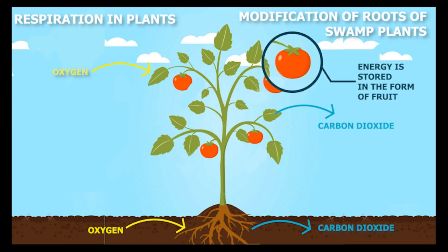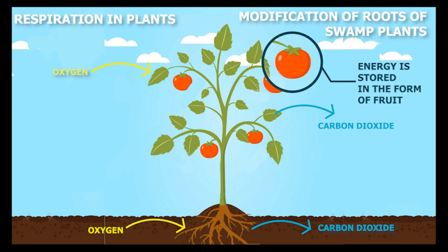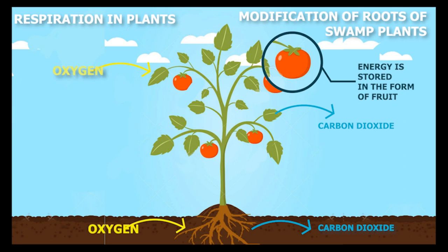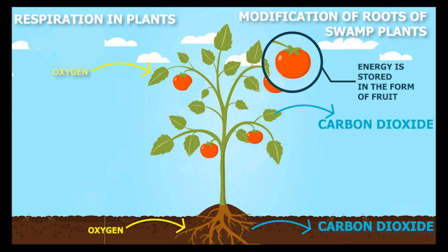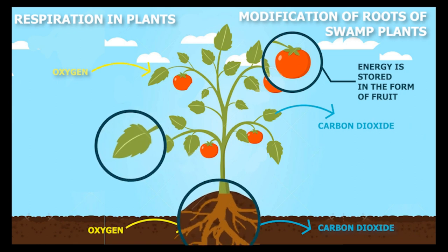Respiration is a process in which food is utilized for growth and energy production. In respiration, oxygen is absorbed and carbon dioxide is released. In a plant, gaseous exchange due to respiration takes place at the leaves and roots.